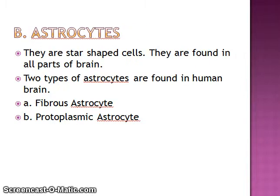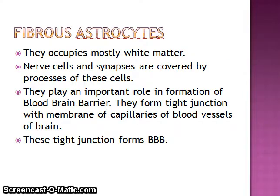Next are astrocytes. They are star-shaped cells found in all parts of the brain. Two types of astrocytes are found in the human brain: fibrous astrocytes and protoplasmic astrocytes. Fibrous astrocytes occupy mostly the white matter. The processes of these cells cover neuron cell bodies and synapses. They play an important role in the formation of the blood-brain barrier.